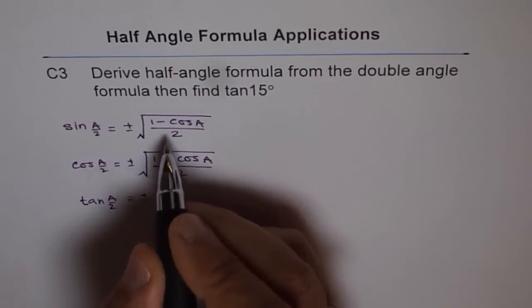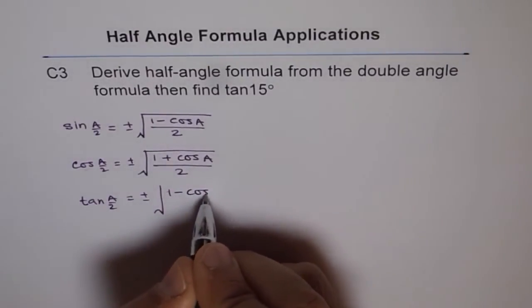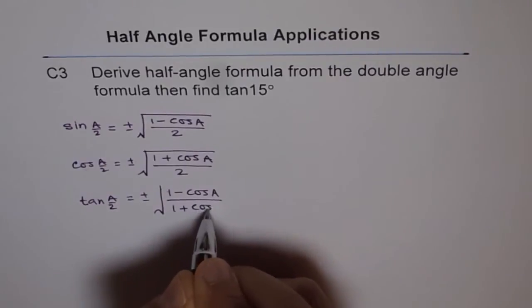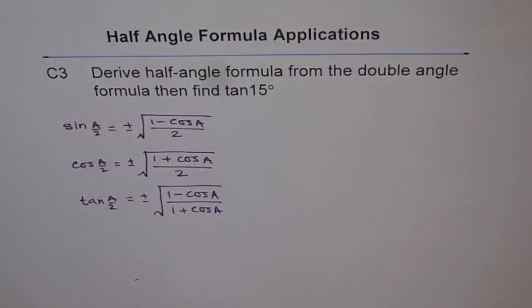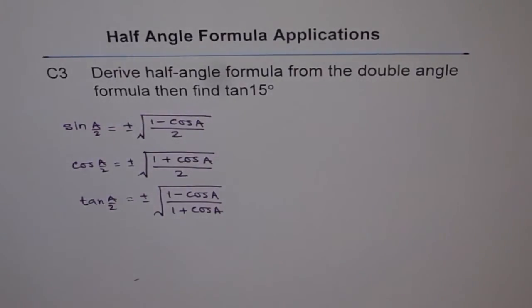If we do so, what do we get? We get square root of 1 minus cos a divided by 1 plus cos a. So, that is the formula for tan a by 2. And fortunately, here we have all the three formulas together.